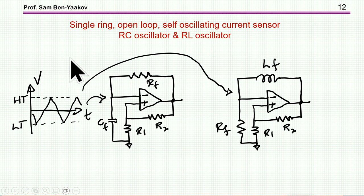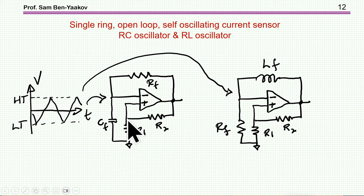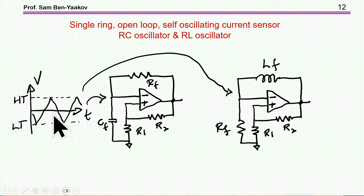I'm moving to another method of current sensing with the flux gate, which is based on self-oscillation rather than external excitation of the core. To explain it, let me start with this RC oscillator built around a comparator with feedback that makes it like a Schmitt trigger. These two resistors set the lower and upper triggering levels. The capacitor is being charged; as it hits the high threshold, it swings back, the voltage goes down until it reaches the lower threshold, and so we have an oscillator.